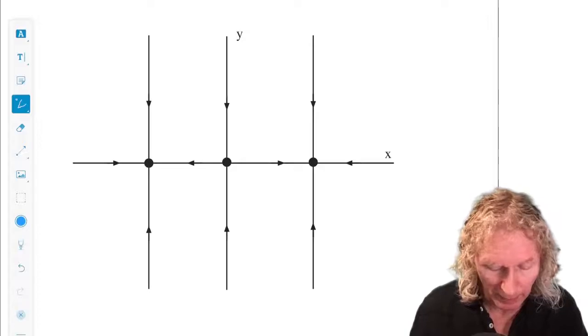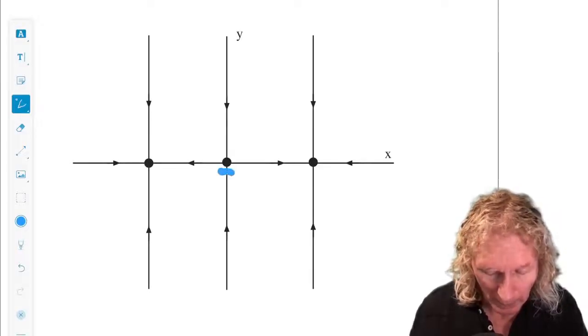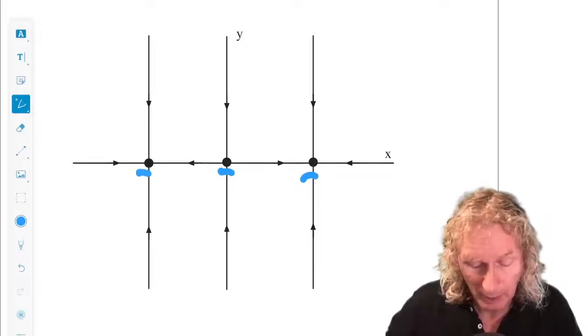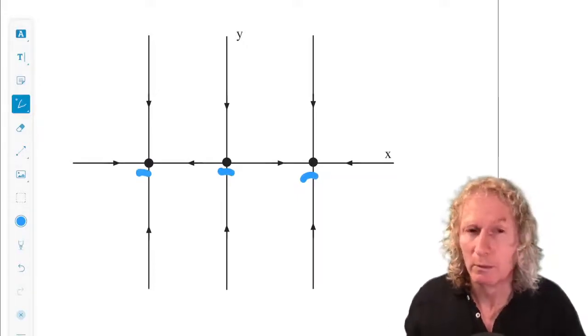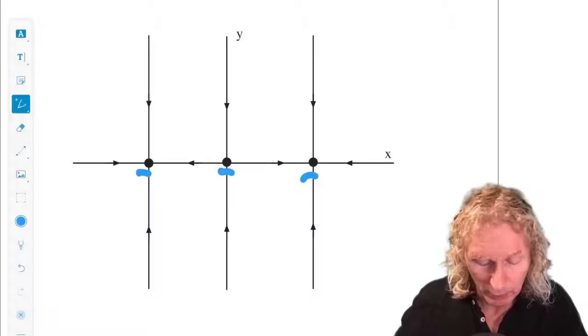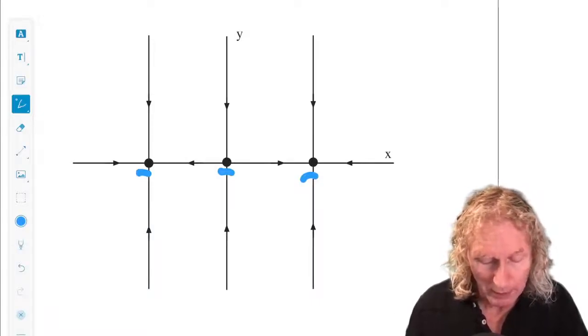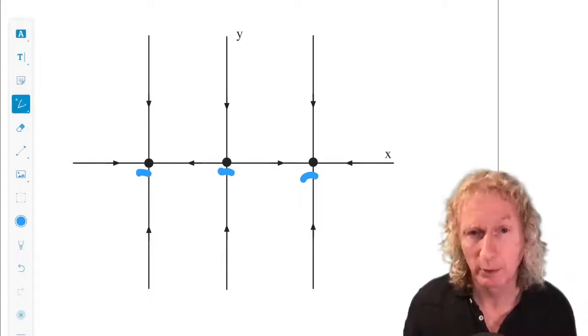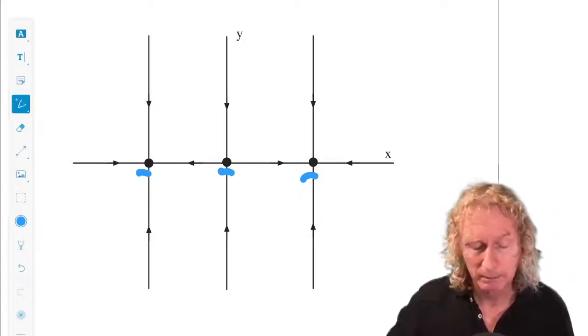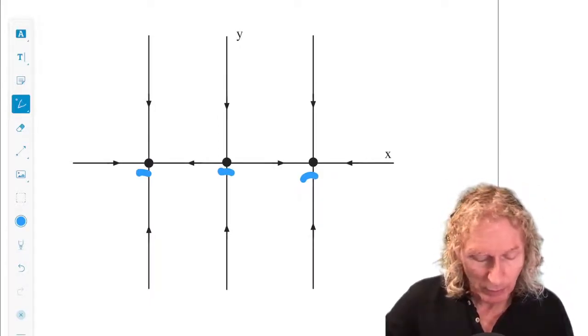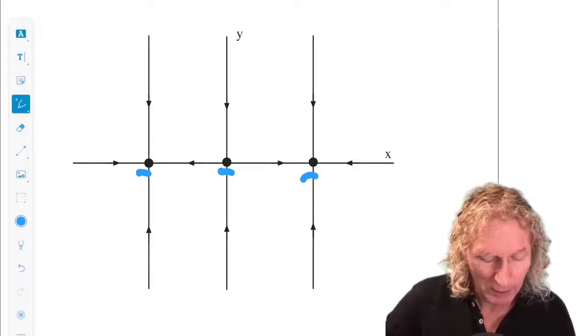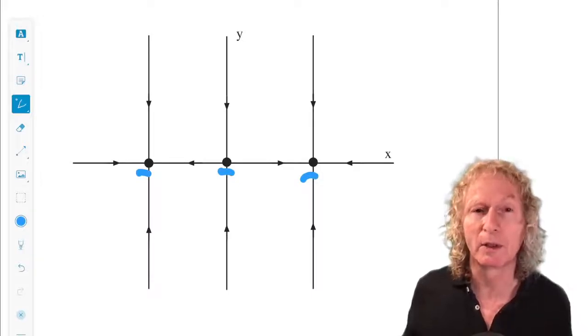So the origin is a saddle, and plus one and minus one are both sinks. Okay, so for the sinks, the basin of attraction for plus one is the right half plane, x greater than zero, strictly greater than zero. And the basin of attraction for the sink minus one is the left half plane, x less than zero.